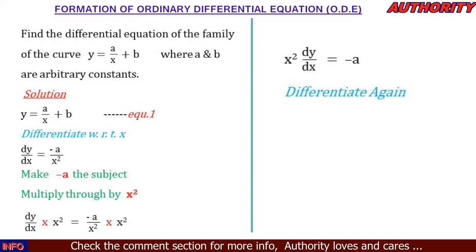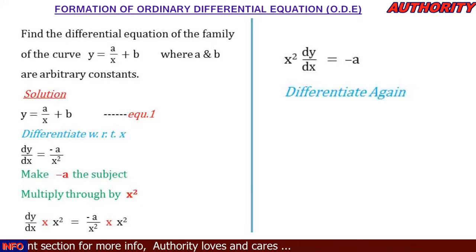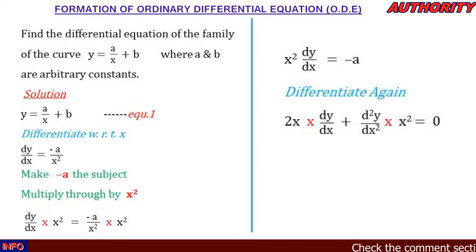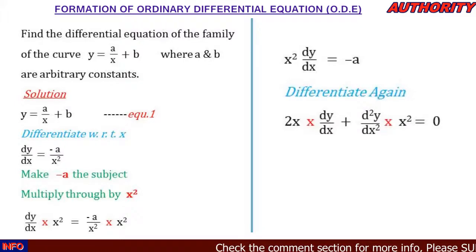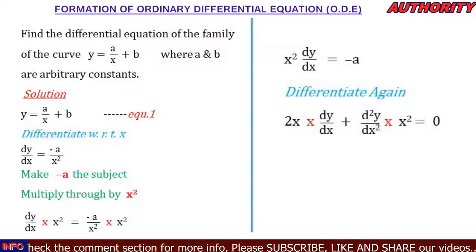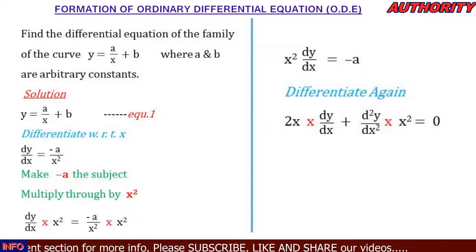Now we differentiate for the second time. On the left hand side we have x² dy/dx, so we apply the product rule: differentiate x² and multiply by dy/dx, plus differentiate dy/dx and multiply by x². That gives us 2x dy/dx plus x² d²y/dx². On the right hand side, differentiating -a (a constant) gives zero.